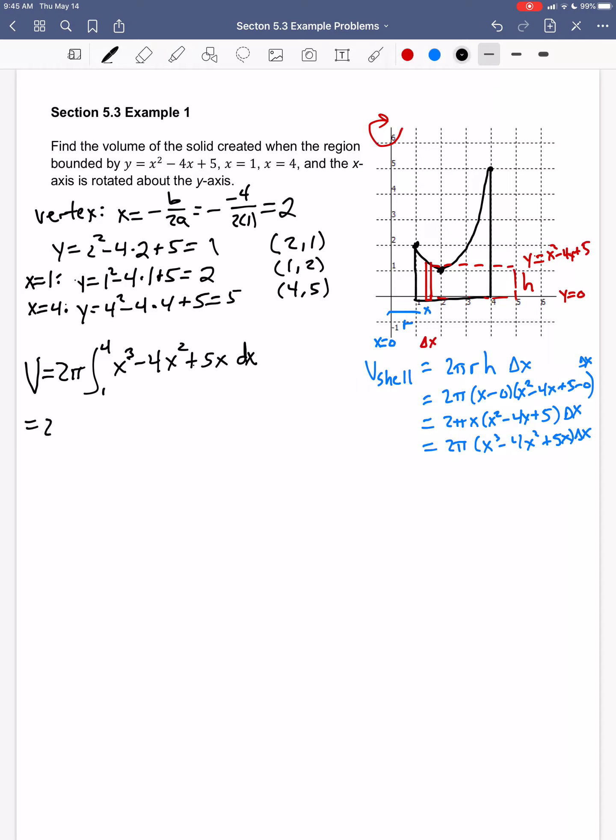I'm going to take the antiderivative. So x to the fourth over 4 minus 4x to the third over 3 plus 5x squared over 2, evaluated between 1 and 4.